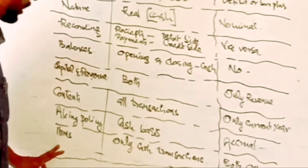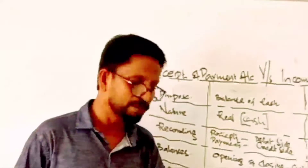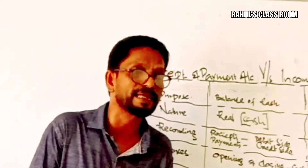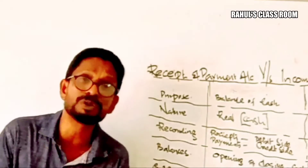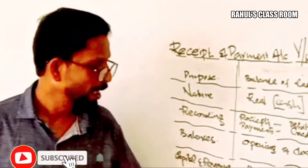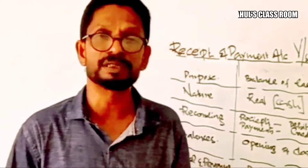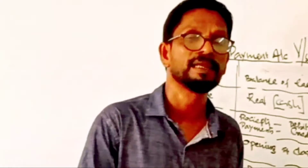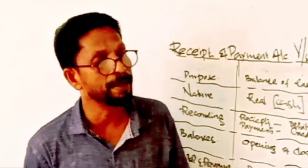The eighth difference is Items. In the Receipt and Payment Account, we can see only cash transactions — non-cash transactions are not recorded there at all. But in the case of the Income and Expenditure Account, it records both cash transactions and non-cash transactions. For example, depreciation is recorded in the Income and Expenditure Account but not in the Receipt and Payment Account.